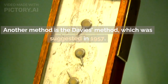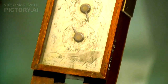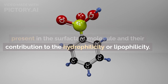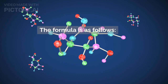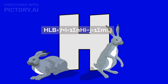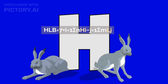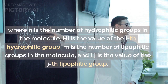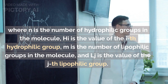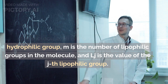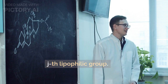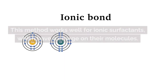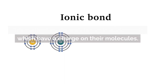Another method is the Davies method, which was suggested in 1957. This method is based on the chemical groups present in the surfactant molecule and their contribution to hydrophilicity or lipophilicity. The formula is: HLB = 7 + Σ(Hᵢ) − Σ(Lⱼ), where Hᵢ is the value of the i-th hydrophilic group and Lⱼ is the value of the j-th lipophilic group. The values of the different groups can be found in the tables provided by Davies. This method works well for ionic surfactants, which have a charge on their molecules.